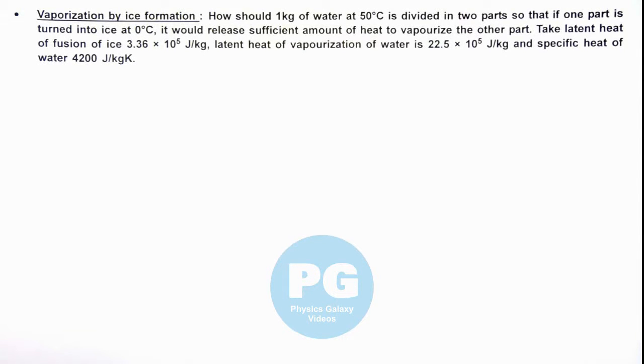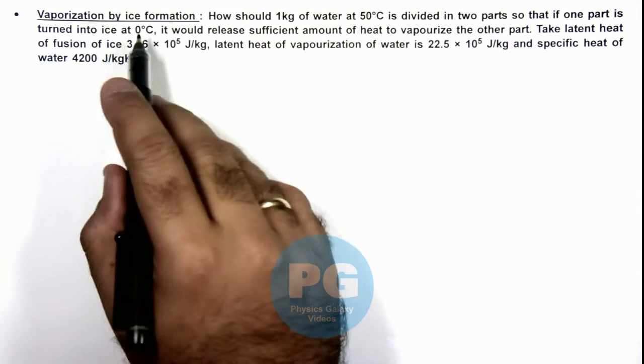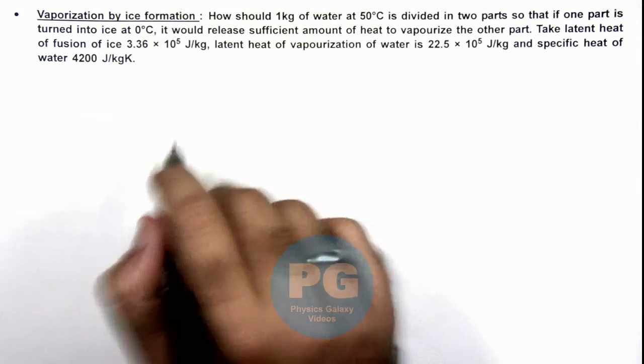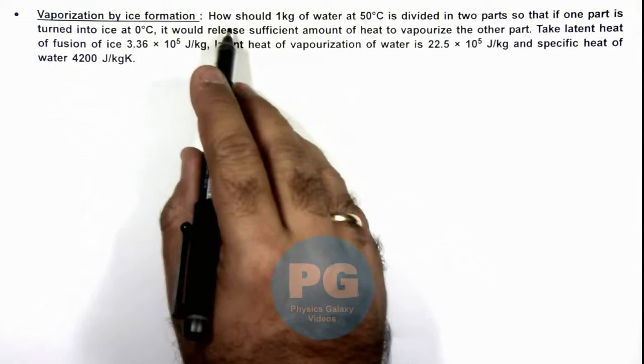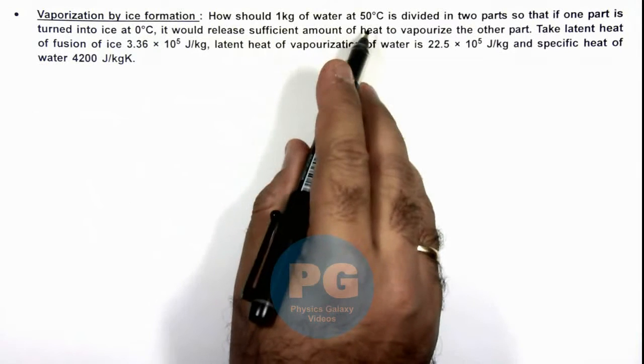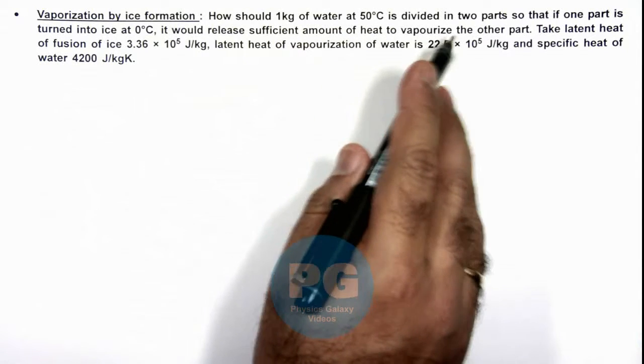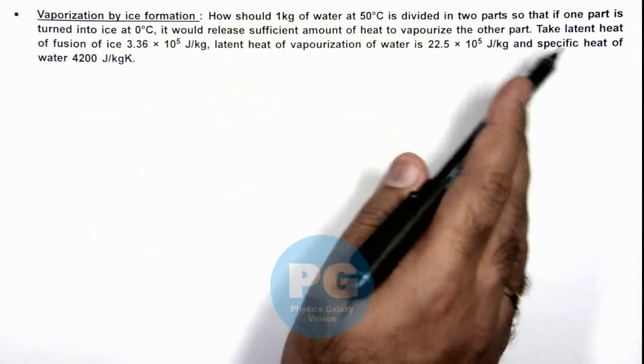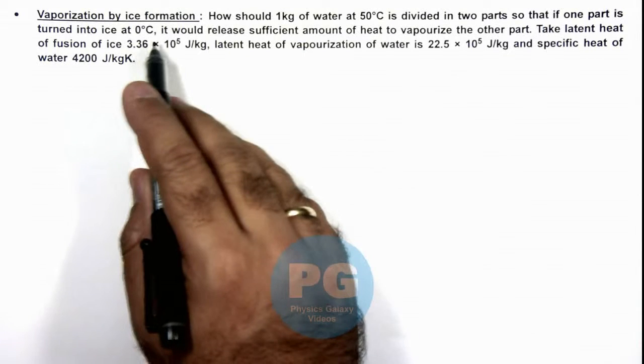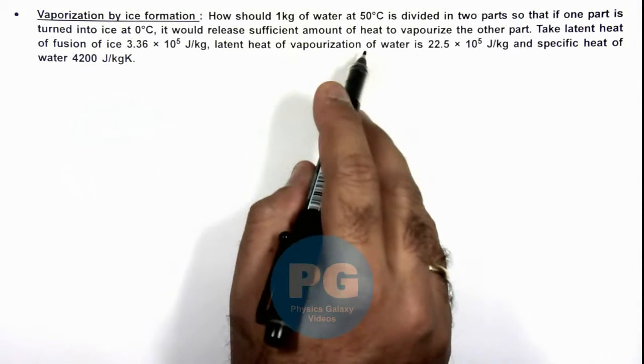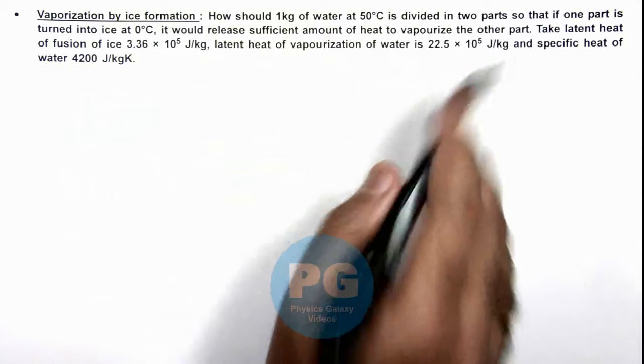In this illustration we'll discuss vaporization by ice formation. Here we are required to find how should 1 kilogram of water at 50 degrees Celsius be divided in 2 parts, so that if 1 part is turned into ice at zero degrees Celsius it would release sufficient amount of heat to vaporize the other part.